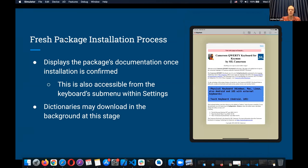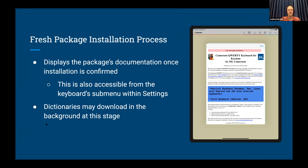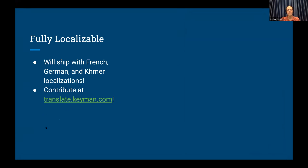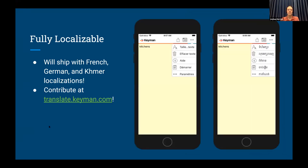We also support QR codes, like with many of our other platforms. One of our big pushes: the app is now fully localizable. We have French, German, and Khmer localizations already supported, as you can see with these screenshots.